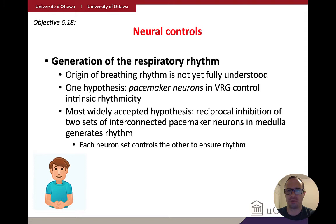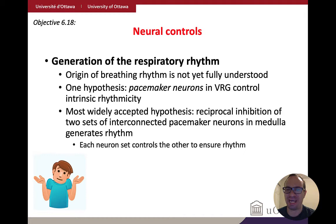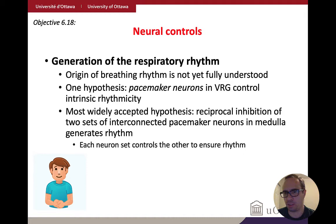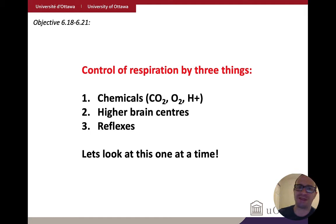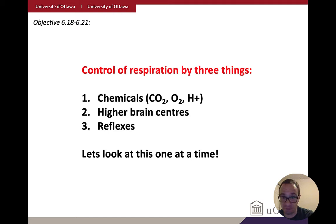What generates the respiratory rhythm? This isn't fully understood. The respiratory rhythm is analogous to the pacemaker rhythm in the heart — we know a lot about the pacemaker rhythm in the heart, but for the respiratory system it's basically all conjecture. We don't know what sets that basic rhythm or how it works. Maybe one of you will figure it out someday. Control of respiration occurs through three things: chemicals, higher brain centers, and reflexes.